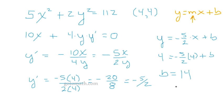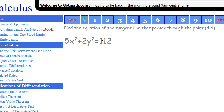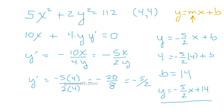Is that right? Okay. So b is 14. So we end up with y = -5/2 x + 14. So there's the equation of the tangent line. That's it.